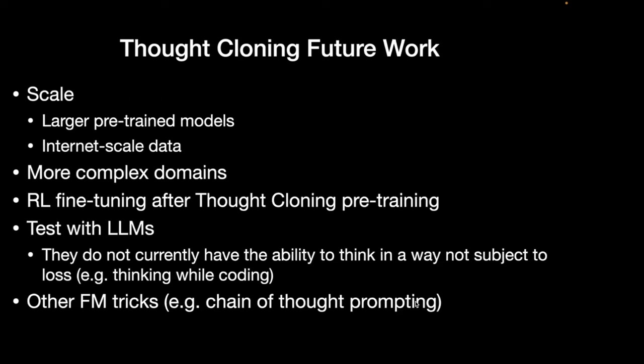Future work includes scaling to larger models, starting with pre-trained models, using internet-scale data, and more complex domains. RL fine-tuning after pre-training could let agents learn to use their language in new ways. One final thought: current language models like GPT do not actually have a scratch pad — when they're coding, all outputs are judged on the final loss, so they can't make a plan and then do the code. Giving them the ability to think out loud in a way not subjected to the final loss could be quite promising.